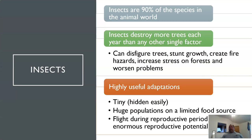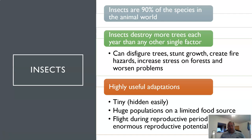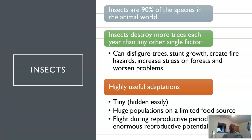Why are insects a problem? Insects make up 90 percent of species in the animal world, so they're the majority of what's out there. Insects destroy more trees each year than any other single factor — not fires, not drought, not human beings. They can disfigure trees, stunt growth, create fire hazards, increase stress, and make problems worse.